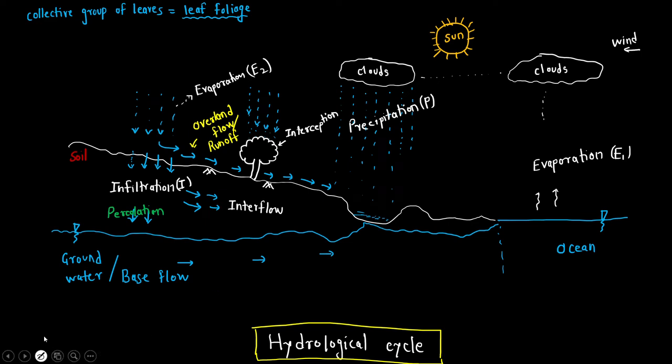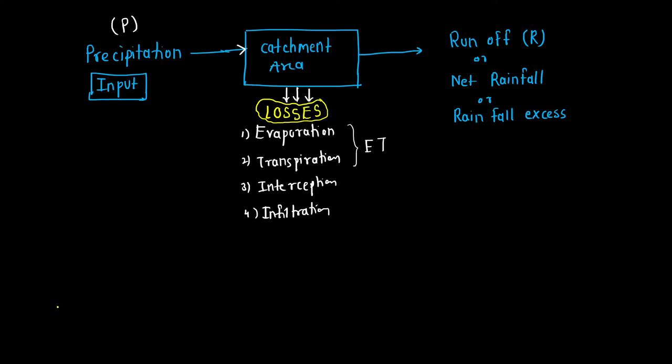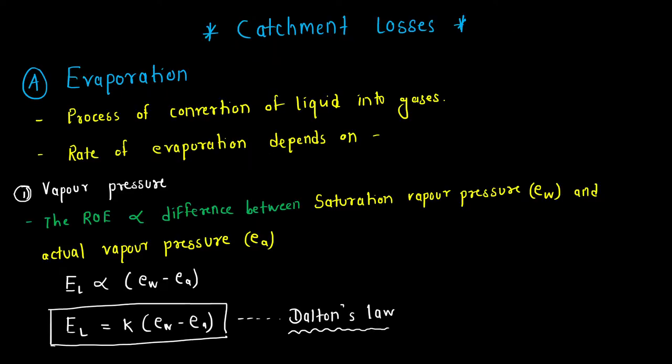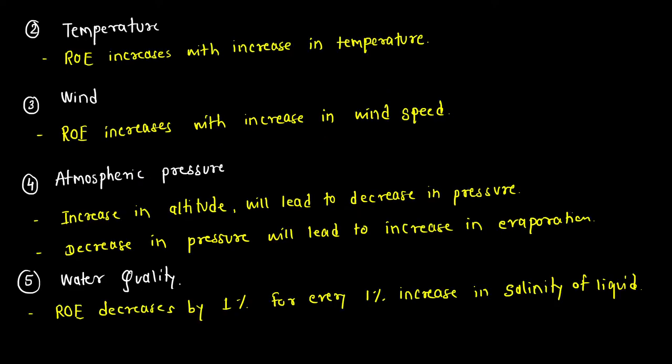We have started with evaporation, which is one of the catchment losses. For our catchment area, the input is precipitation and the output is runoff. Between precipitation and runoff there are certain losses called catchment losses. Starting with the first catchment loss — evaporation — we have seen the various factors which affect the rate of evaporation. Now in this lecture we are going to see the methods to measure evaporation.